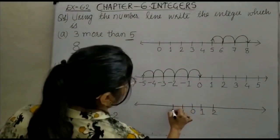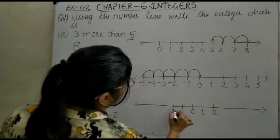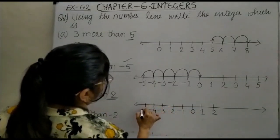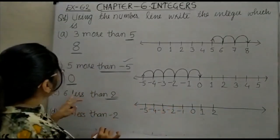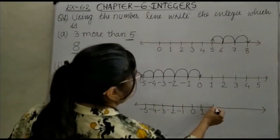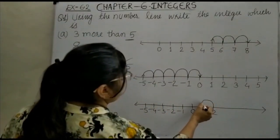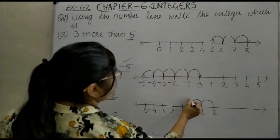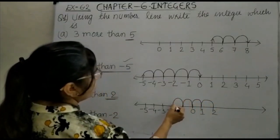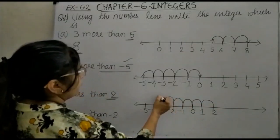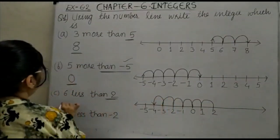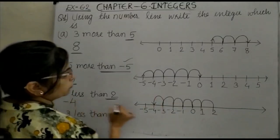So moving left from 2: minus 1, minus 2, minus 3, minus 4, minus 5. We start from 2 — that is 1, 2, 3, 4, 5, and 6 steps. Now we are at minus 4. So our answer is minus 4.